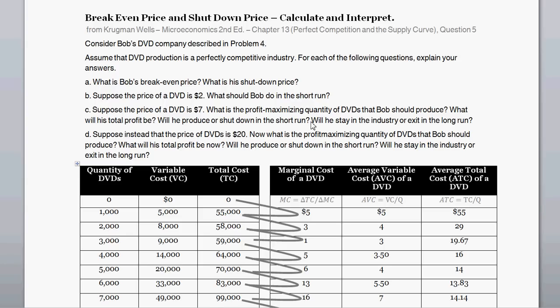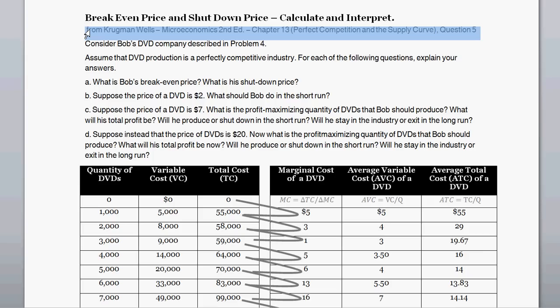Welcome. With this video, we're going to be talking about break-even price and shutdown price. We're going to calculate the break-even price, shutdown price, and then do a little bit of interpretation through these questions. This question is borrowed from Krugman-Wells Microeconomics 2nd Edition, from the chapter on perfect competition and the supply curve. In the video description, I'll give a couple links to additional videos and resources, and shortcuts so you can skip ahead to a particular topic.